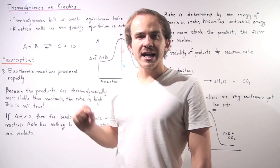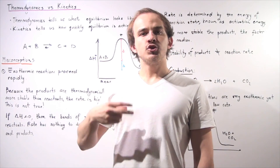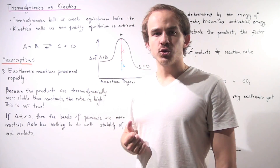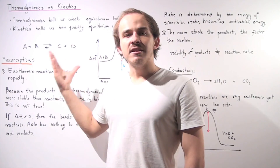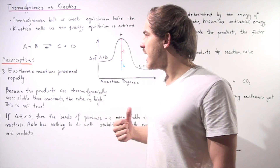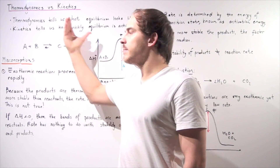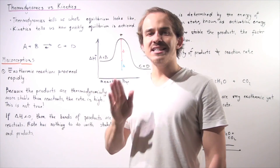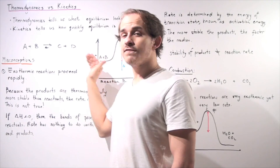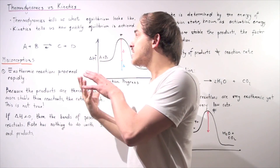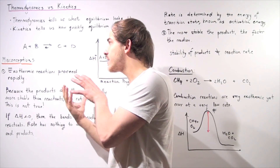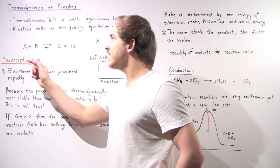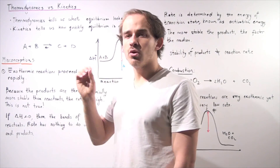Let's suppose we have the following reaction taking place. We have two reactants, A and B, react to produce two products, C and D. If we wait some amount of time and equilibrium is established, that means the rate of the forward reaction is equal to the rate of reverse. Our concentrations of reactants and products are not changing, but our reaction is still taking place — we have dynamic equilibrium.